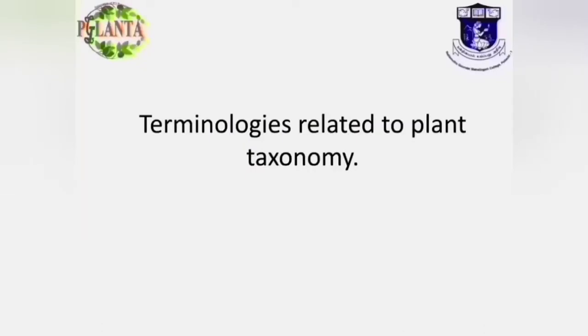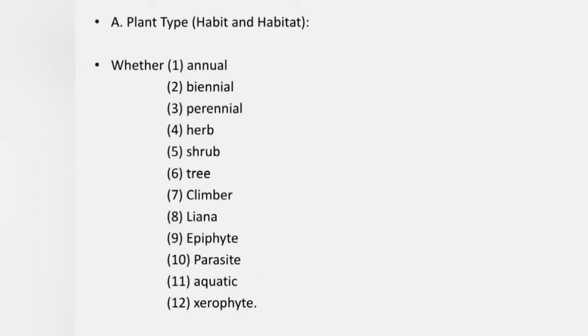Now we start the terminologies related to plant taxonomy. Here we can see the terminologies according to plant type, especially in habit and habitat. That is annual, biennial, perennial, herb, shrub, tree, climber, liana, epiphyte, parasite, aquatic, and xerophytes.